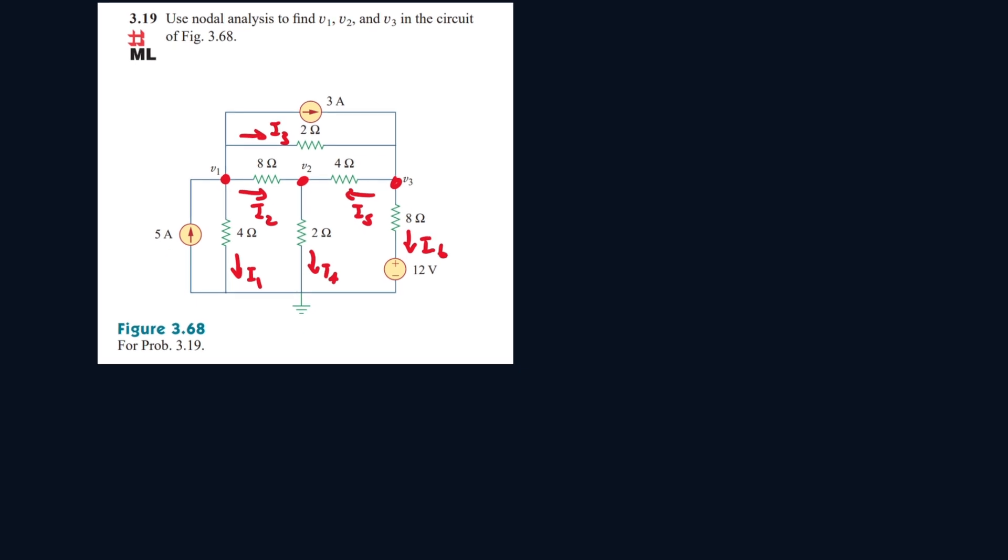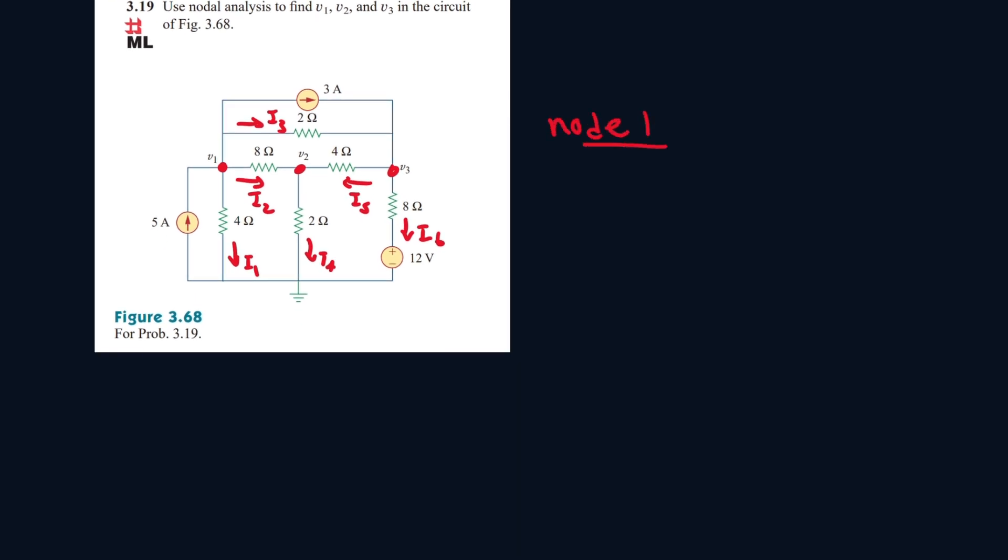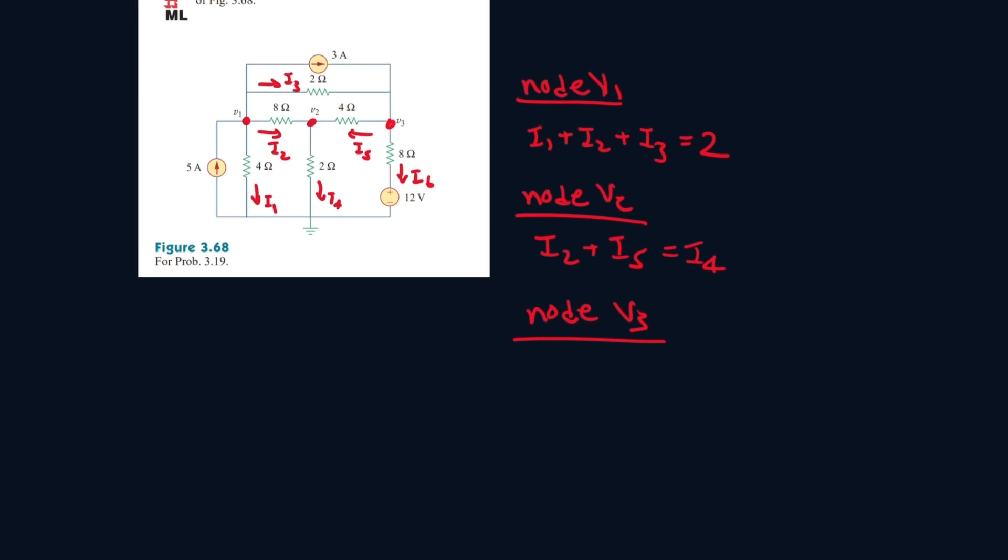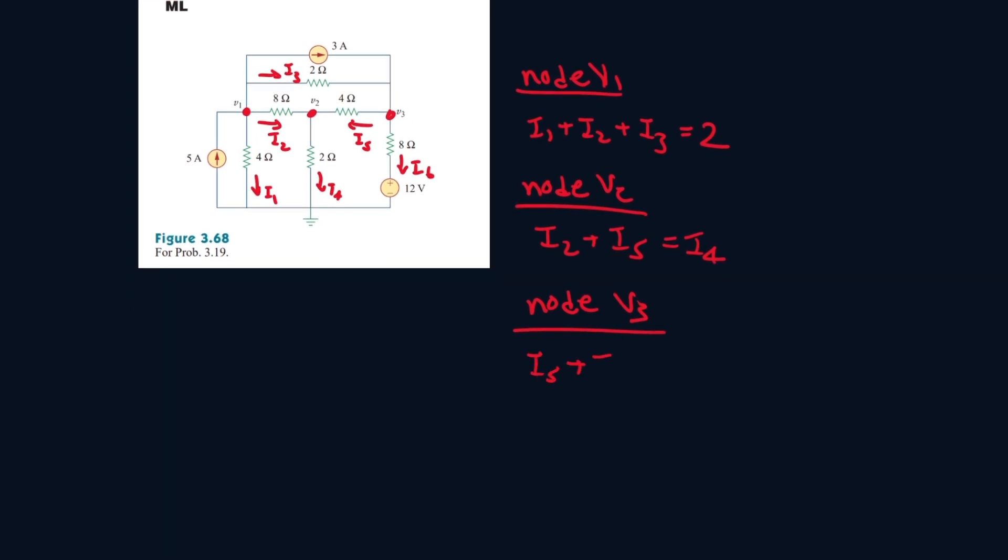Alright that looks good. Let's write them down here. Node V1: it'll be I1 plus I2 plus I3 plus 3 equals 5, bring the 3 to the other side, so it'll be 2. Node V2: it'll be I2 plus I5 equals I4. Node V3: it's I5 plus I6, and this will be equal to I3 plus 3 amps.